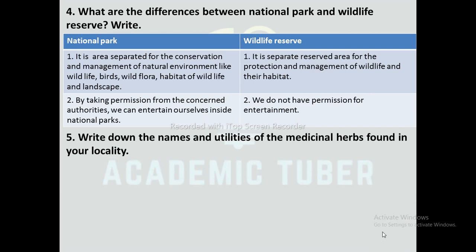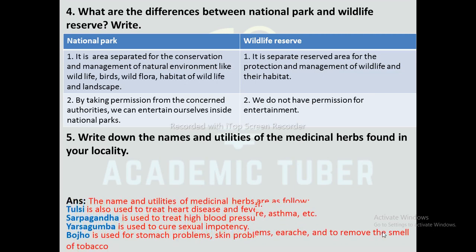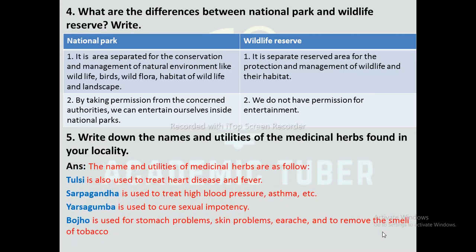Question number 5: Write down the names and utilities of medicinal herbs found in your locality. First, Tulsi — it is used to treat high blood pressure, asthma, etc. Yarsagumba — it is used to cure sexual impotency. Bojo — it is used for stomach problems, skin problems, earache, and to remove the smell of tobacco.